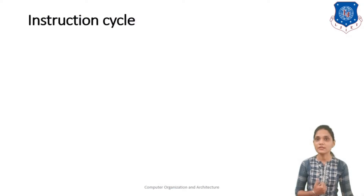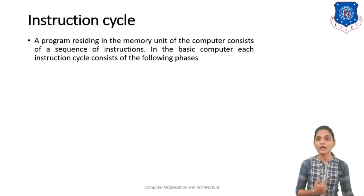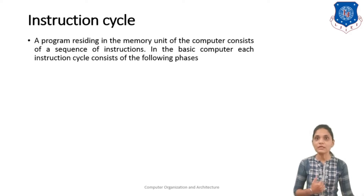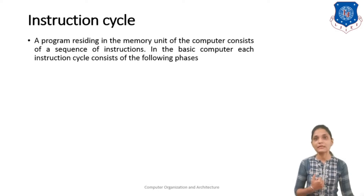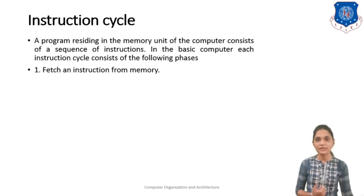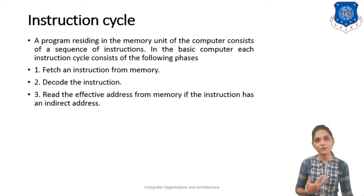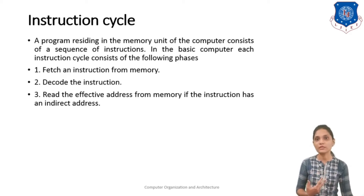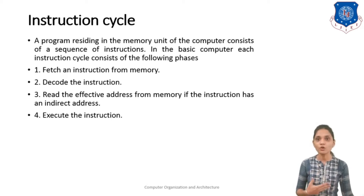Let me first start with the instruction cycle. A program residing in the memory unit of a computer consists of a sequence of instructions. In the basic computer, each instruction cycle consists of the following phases: fetching the instruction from memory, decoding the instruction, reading the effective address from memory if the instruction uses indirect addressing, and execution of the instruction.